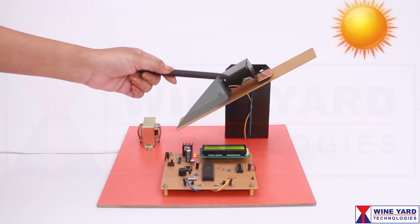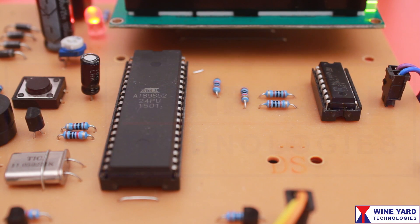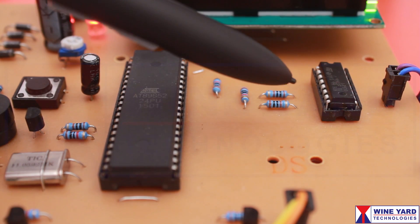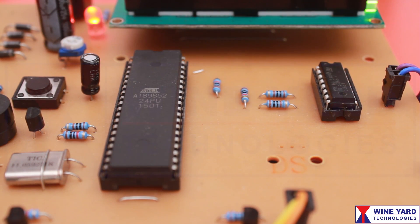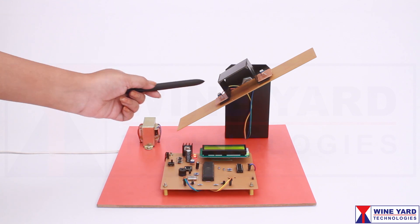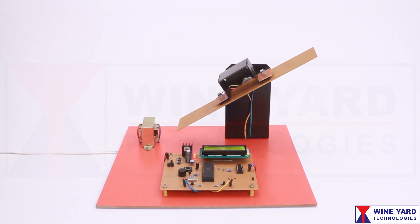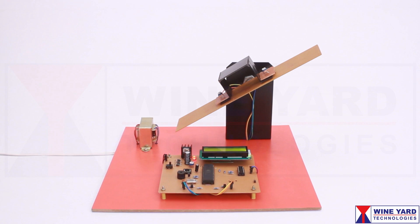This LDR output data is given to the microcontroller. This microcontroller reads the data and sends commands to this H-bridge. This H-bridge rotates the DC motor in clockwise or counterclockwise directions to make the sensors both in bright light condition.